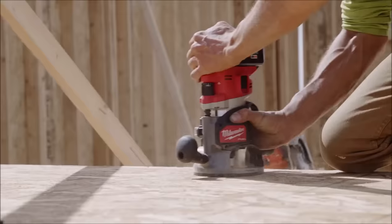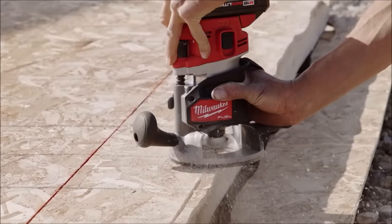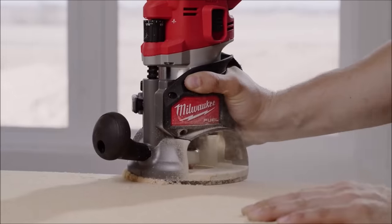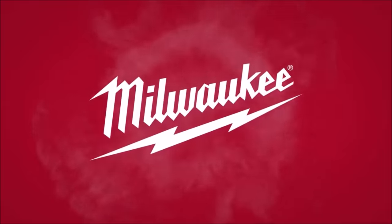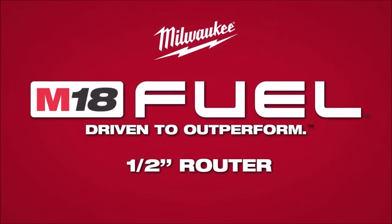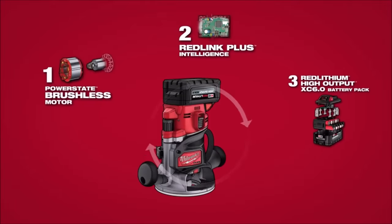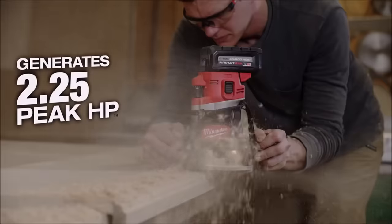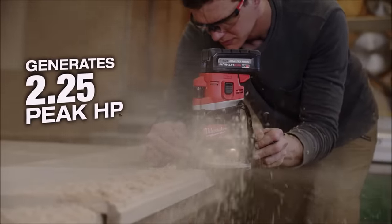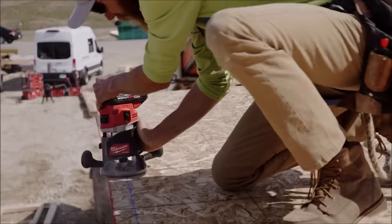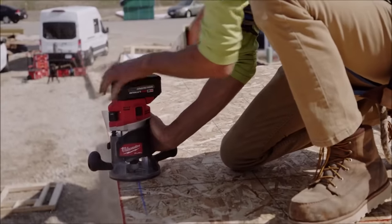Number 2. The Milwaukee M18 Fuel half-inch router sets a new standard for cordless performance, tailor-made for professional carpenters and remodelers. Boasting a robust 2.25 peak horsepower and over 225 linear feet of runtime per charge, this router excels in precision and endurance. The PowerState brushless motor ensures minimal bog down under load, delivering clean, precise cuts and heightened productivity.